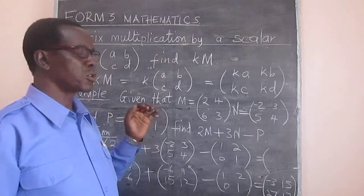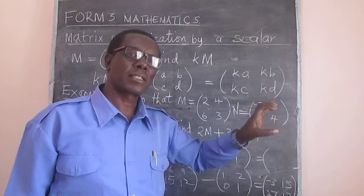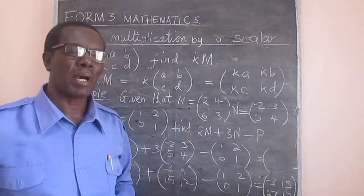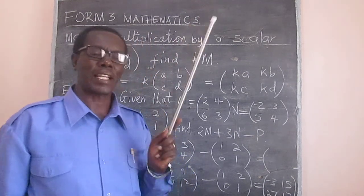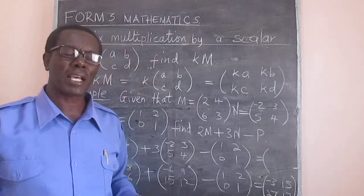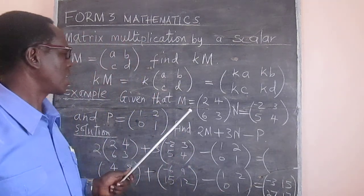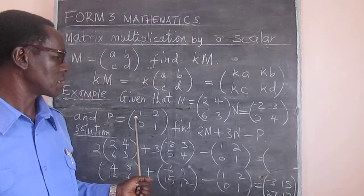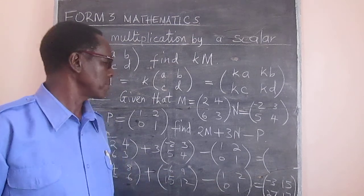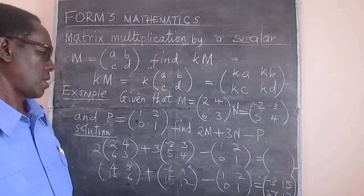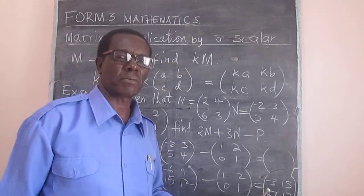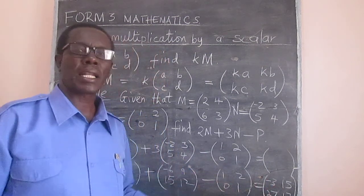Therefore, we have been able to multiply a matrix by a scalar — every element in the matrix must be multiplied by that scalar. This example incorporates scalar multiplication, addition, and subtraction. We multiplied by the scalar first, then added and subtracted corresponding elements to get our final result.